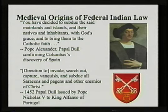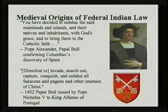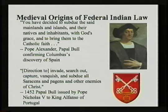The legal documents justifying this position were a series of papal bulls issued by the Pope. Pope Alexander wrote: 'You have decided to subdue the said mainlands and islands and their natives and inhabitants, with God's grace, and to bring them to the Catholic faith.' A 1452 Papal Bull issued by Pope Nicholas V stated: 'You have a direction to invade, search out, capture, vanquish, and subdue all Saracenes and pagans and other enemies of Christ.'